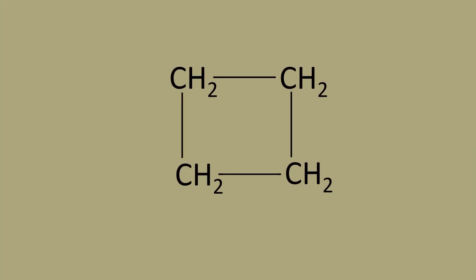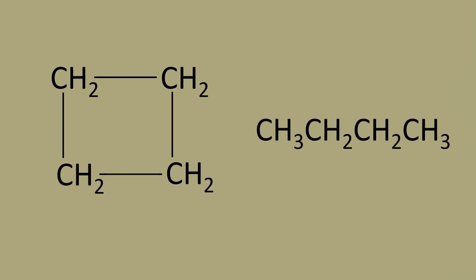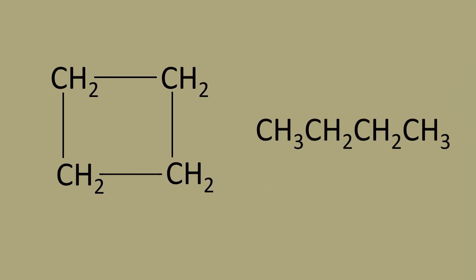For example, for a cycloalkane of four carbon atoms, it will adopt the name cyclobutane. Comparing with a straight-chain analogue, that would be n-butane.